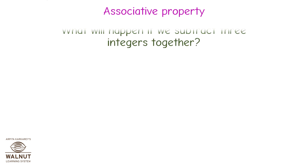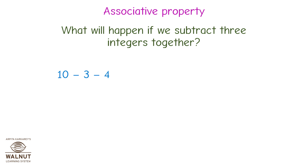Associative property. Now you know that the subtraction of integers is not commutative. Since a change in order changes the answer, the associative property does not hold in subtraction. Let's check it out. What will happen if we subtract three integers together? Let's subtract these three integers: 10 minus 3 minus 4. Here, we can form two groups to subtract the numbers. First, we subtract 10 minus 3, which is equal to 7, and then 7 minus 4, which is equal to 3.